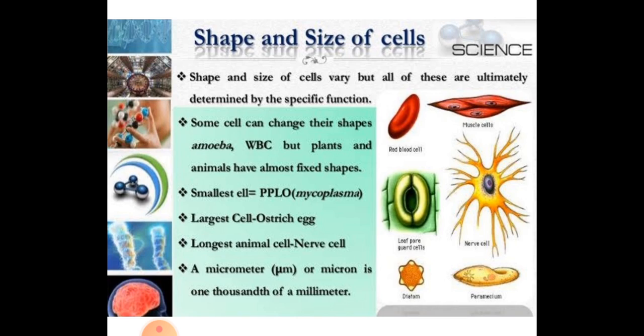If we talk about the smallest cell, the smallest cell is Mycoplasma — also called PPLO, pleuropneumonia-like organism. This is the smallest cell, and its length is about 0.3 micrometers.